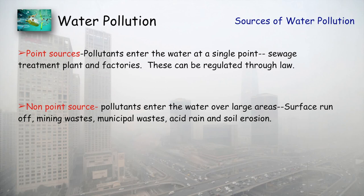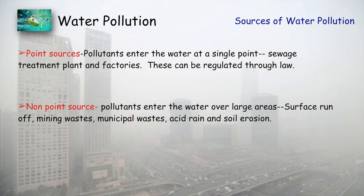Now let's talk about sources. There are two types: point source and non-point source. Point source pollutants enter the water at a single point — for example, sewage treatment plants and factories. These can be regulated easily through law.